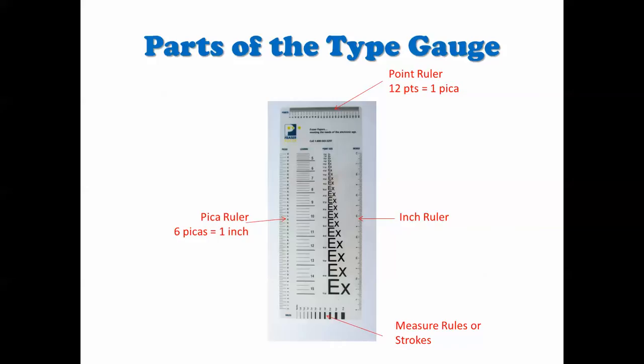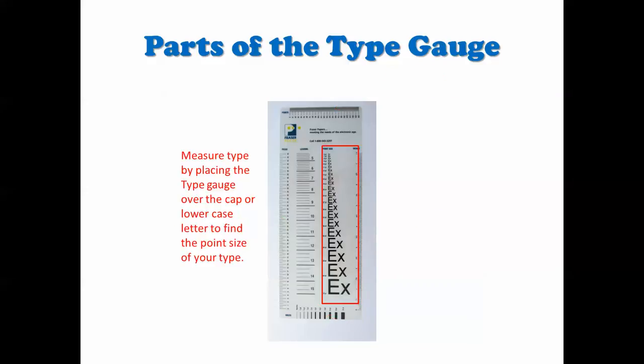Now when you're measuring to find your type size, you lay this over your type and you place the E over your cap letter, and whenever it's the same size you can be fairly sure that this would be the correct type size. You may also do this with the lowercase X for X-height.